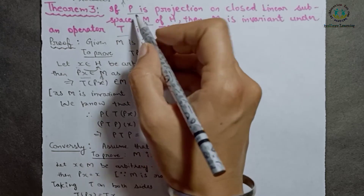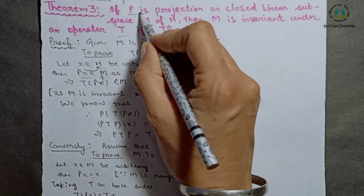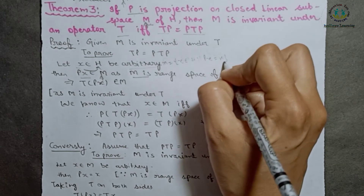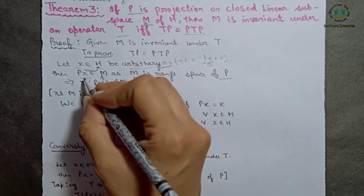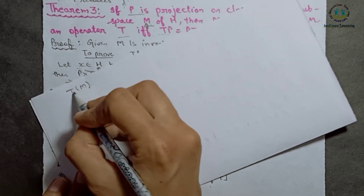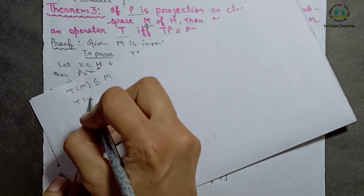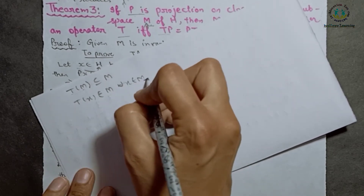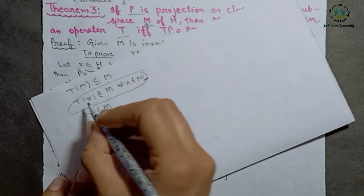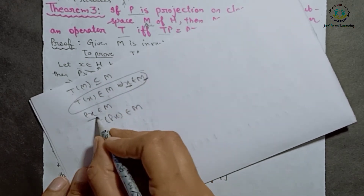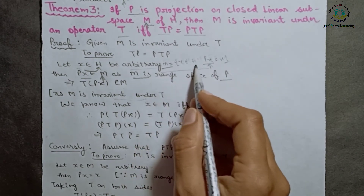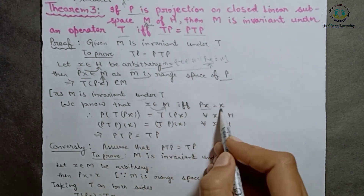P is a projection on set M. As discussed in the previous video lecture, if P is a projection on a set M, then M is the range space of P. Elements of the range space satisfy Px = x. So Px is a member of M. Since M is invariant under T, T(M) is a subset of M — meaning Tx belongs to M for every x in M. Here Px belongs to M, so T(Px) also belongs to M.